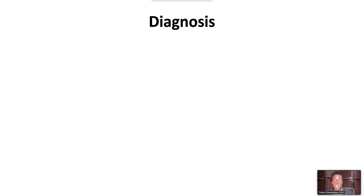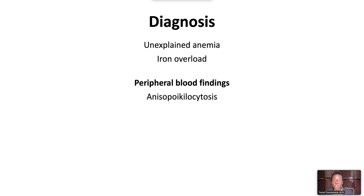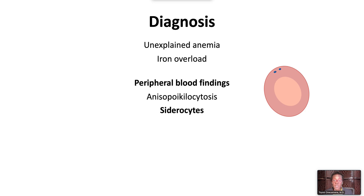A diagnosis should be suspected when there is unexplained anemia and iron overload, as evidenced by elevated serum ferritin and transferrin saturation. The peripheral blood film can show marked anisopolkilocytosis, or red blood cells of varying sizes and shapes, including target cells and occasional siderocytes. Siderocytes are hypochromic red blood cells with distinctive coarse basophilic granules, usually in pairs, and represent the mature counterpart of ring sideroblasts in the bone marrow.